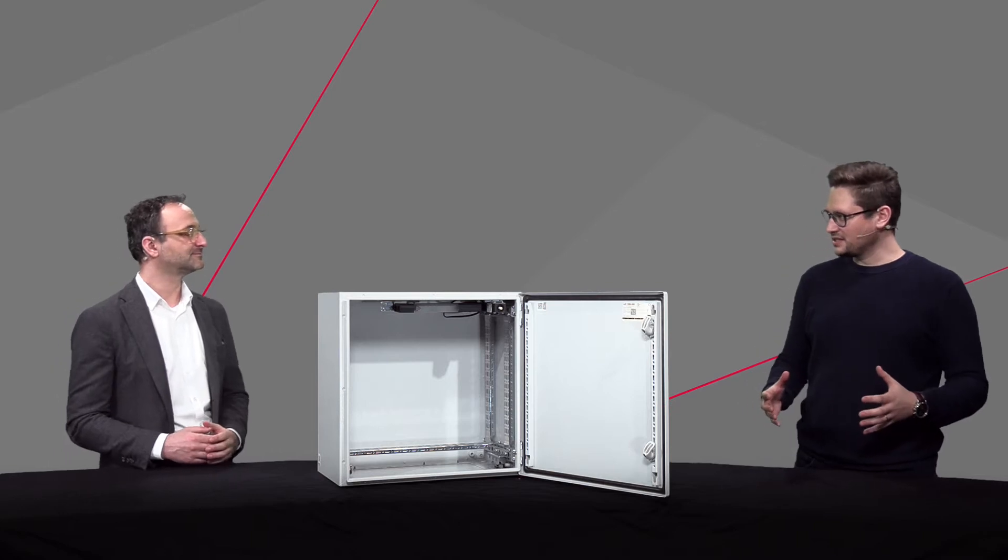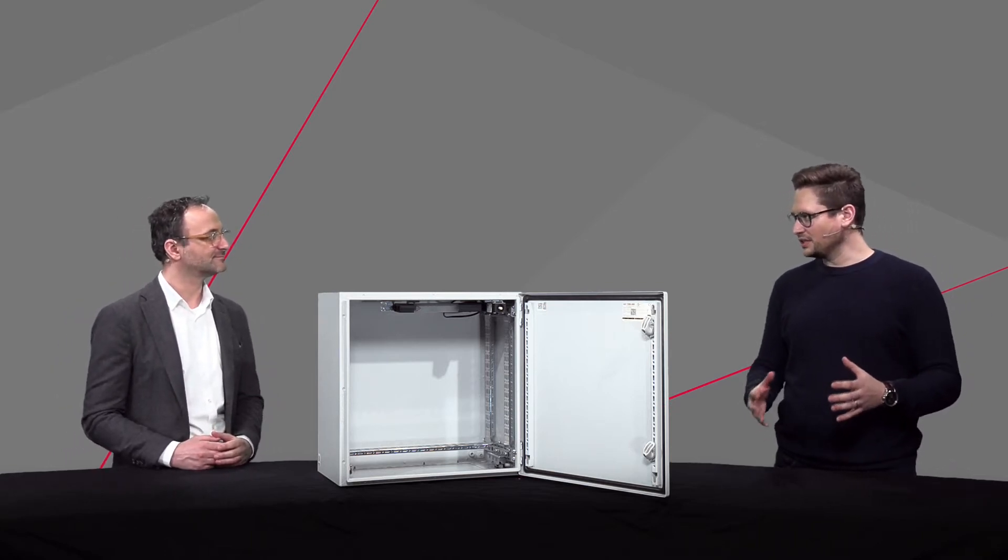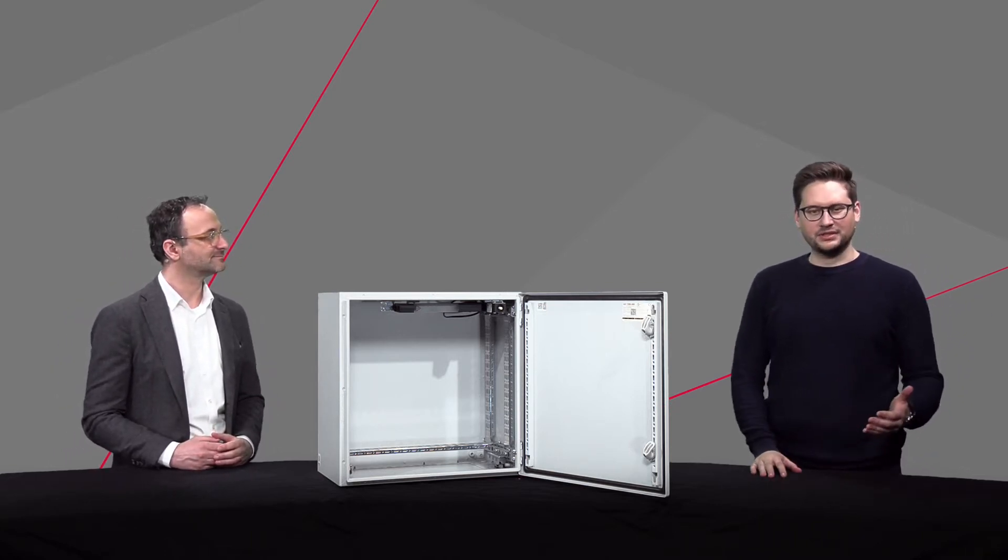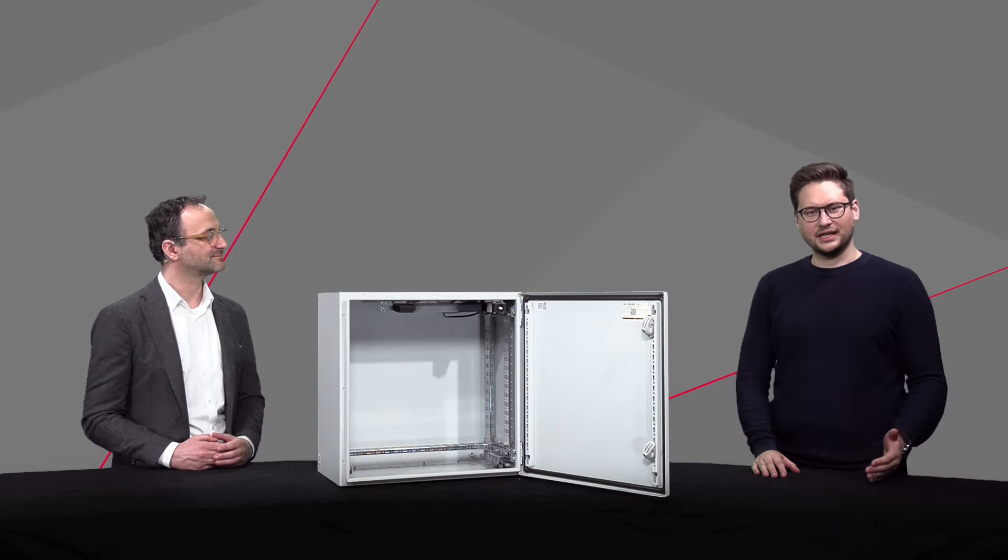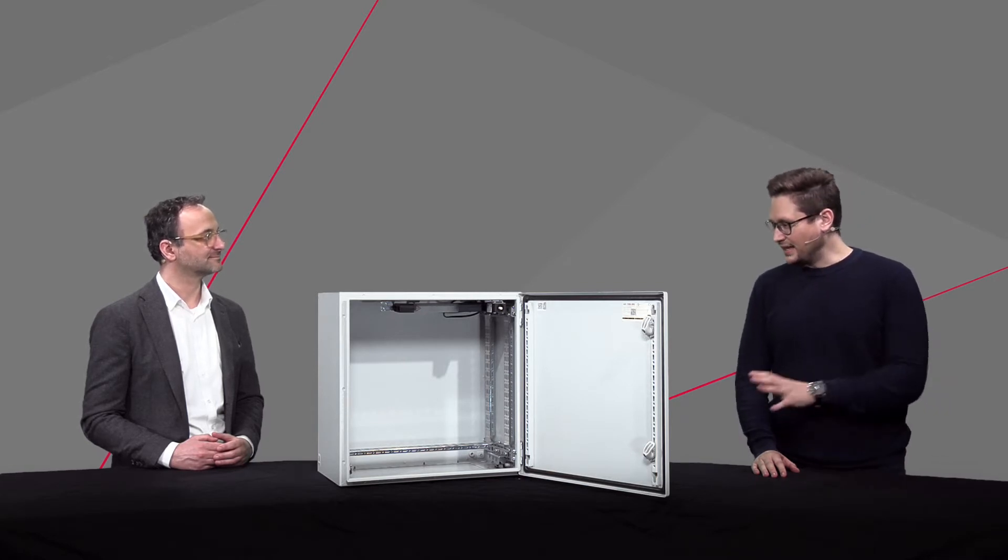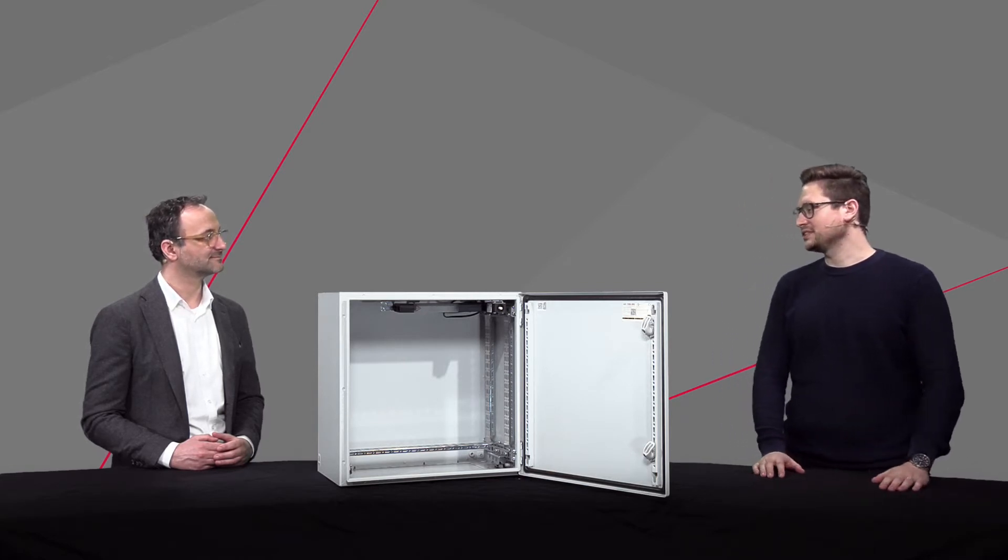You know the idea of a system already from the VX, from our large enclosure system. There you have the possibility to install components via the 25mm grid and are also flexible at a later time if something needs to be added. The AX is now also capable of the same.